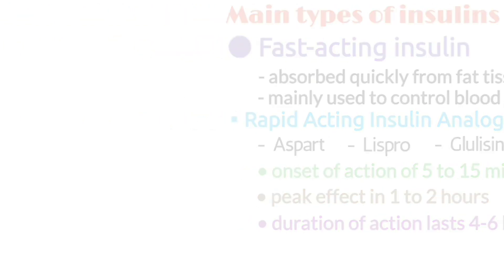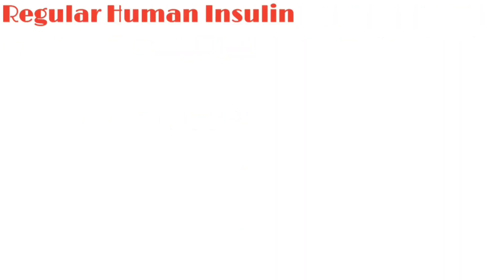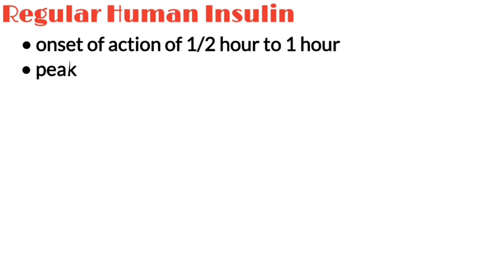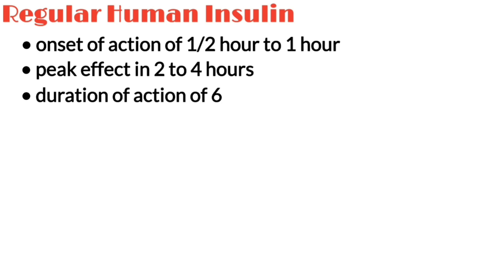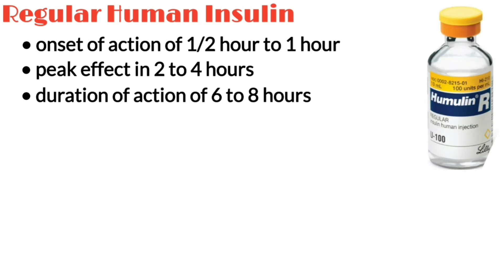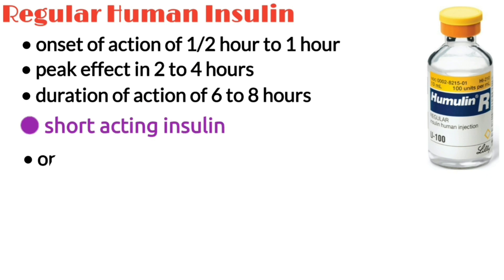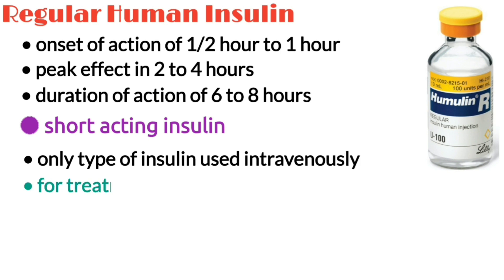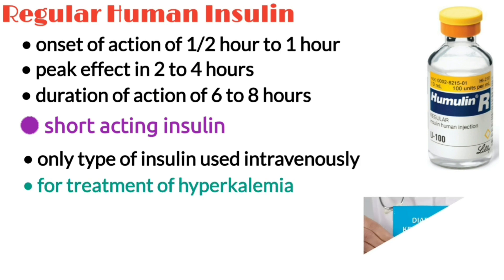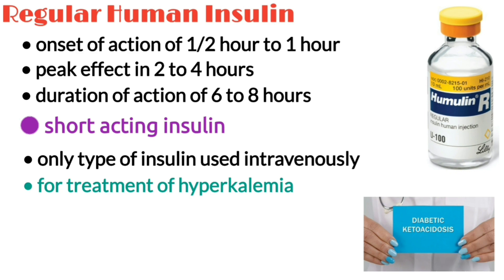The other fast-acting type is regular human insulin, which has an onset of action of 0.5–1 hour, peak effect in 2–4 hours, and duration of action of 6–8 hours. Regular human insulin, also called short-acting insulin, is the only type that can be used intravenously for treatment of hyperkalemia, mainly in diabetic ketoacidosis, or DKA.